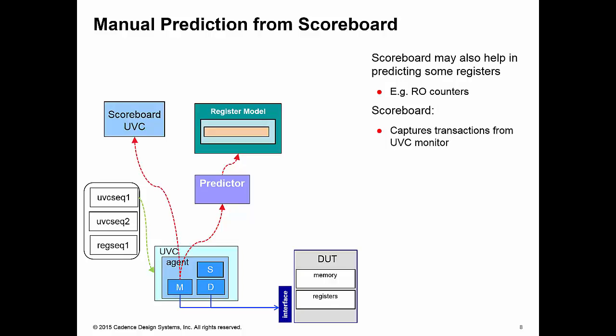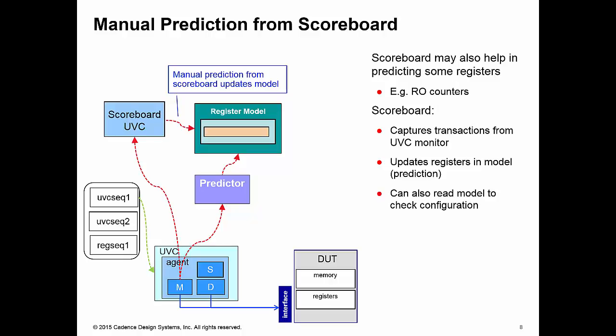So what we can do here is the scoreboard can collect all the transactions which are being sent by the UVC into the DUT by connecting to the analysis port of the monitor. This can then do direct writes to the register model using the predict method in order to keep the register model up to date. But it can also read the register model.